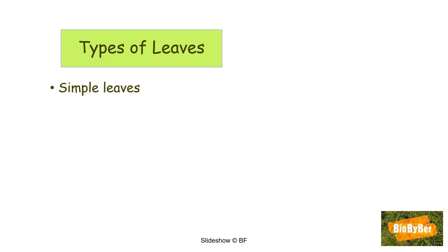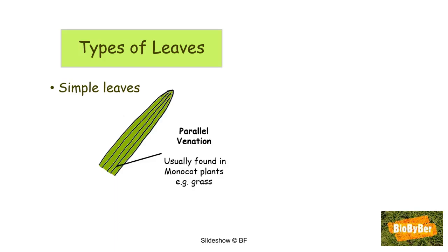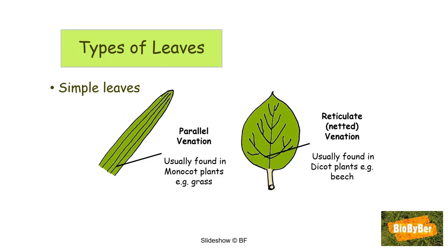There are different types of leaves. Simple leaves consist of a single leaf. They can have parallel venation, where the veins run parallel to each other, which is usually found in monocot plants such as grasses. The other type of simple leaf has reticulate or netted venation, where the veins are like a net. This is usually found in dicot plants, like beech leaves.